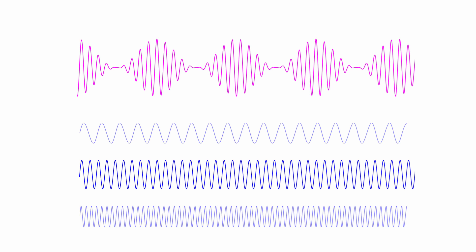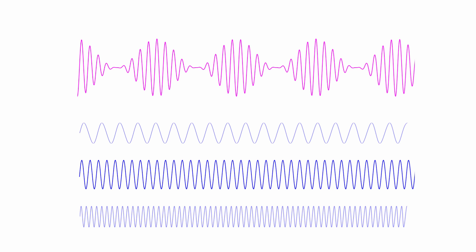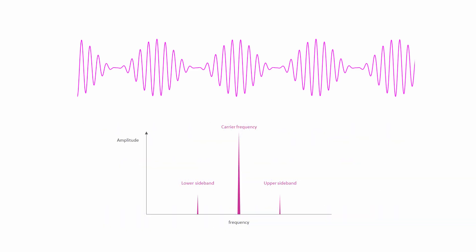So the mixer outputs a signal with three frequency components. The frequency of the carrier itself, a component with a higher frequency than the carrier, and a component with a lower frequency than the carrier. The magnitude of these frequency components can be plotted on a chart of amplitude versus frequency. This is what we refer to as the frequency domain. The carrier frequency is the large spike in the middle. The spikes on either side are known as sidebands. It's worth noticing that the modulated wave now occupies a wider range of frequencies than the original modulating wave. Modulation has increased the bandwidth of the signal.